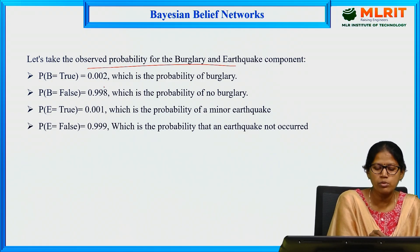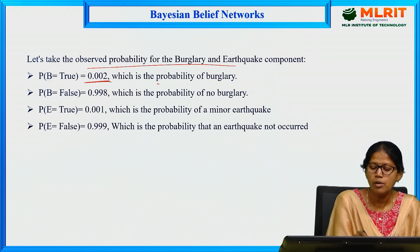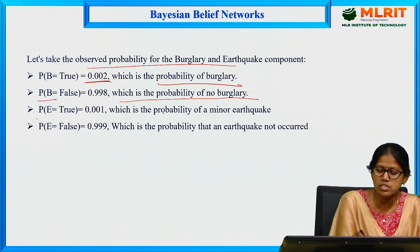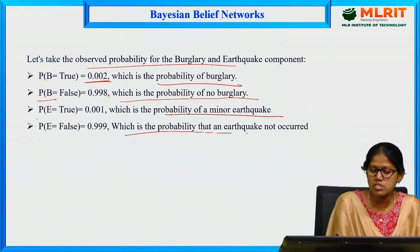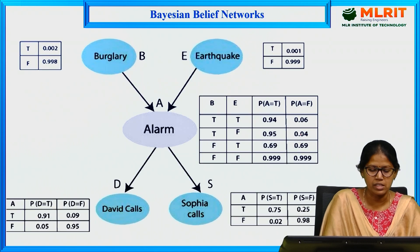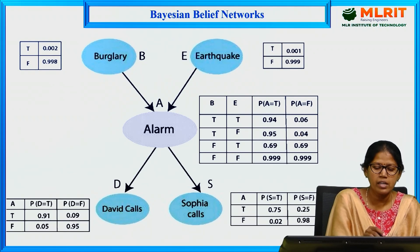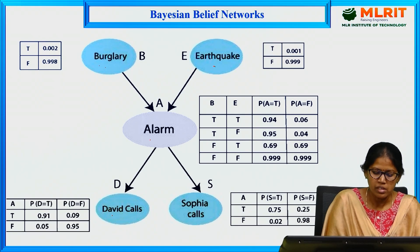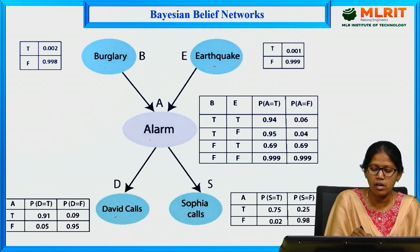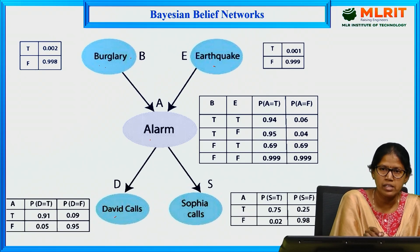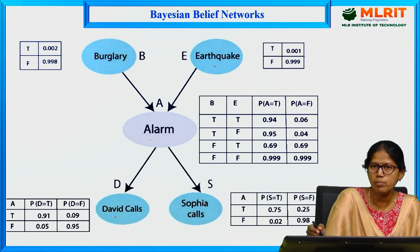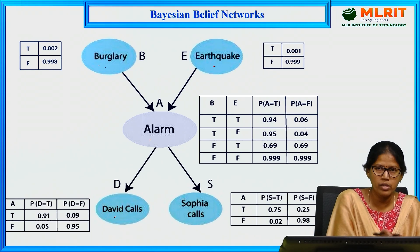These are the CPT values. When P(B = true) the value is 0.002, which is the probability of burglary. P(B = false) is 0.998, meaning no burglary. P(E = true) is 0.001, the probability of a minor earthquake. P(E = false) is 0.999, meaning no earthquake occurred. Burglary and earthquake are the parent nodes; when these two happen, the alarm rings and alarm is dependent on both.